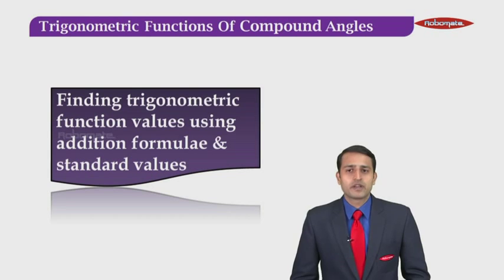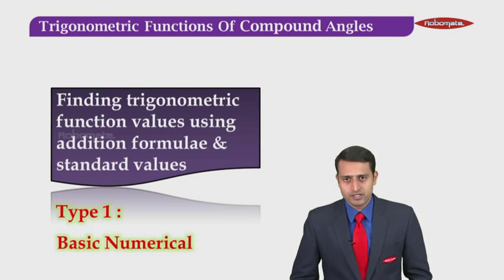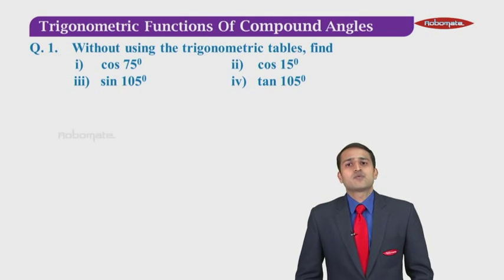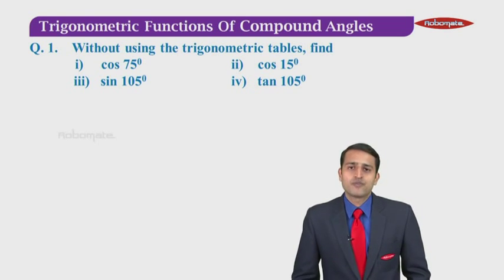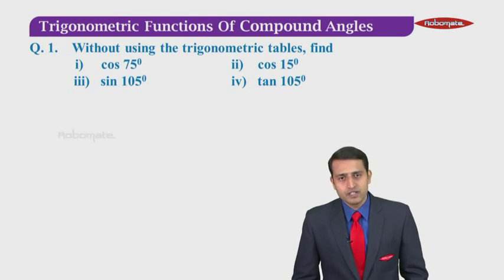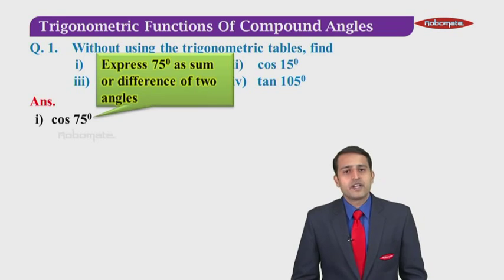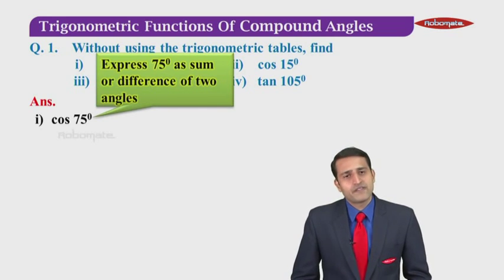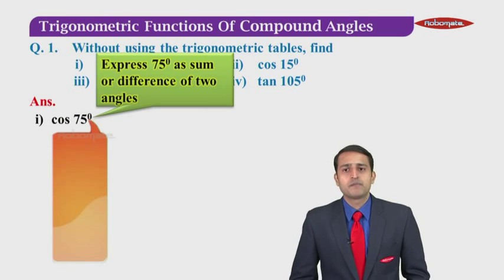Now we will see sums based on trigonometric function values using addition formulas and standard values — type one, which is basic numericals. The question says: without using trigonometric tables, find the values of cos 75°, cos 15°, sin 105°, and tan 105°. For cos 75°, our objective is to express 75° as the sum or difference of two angles. Now 75° can be written as the sum of two numbers in many possible ways, such as 74+1, 76−1, 70+5, 60+15, or 82−7.